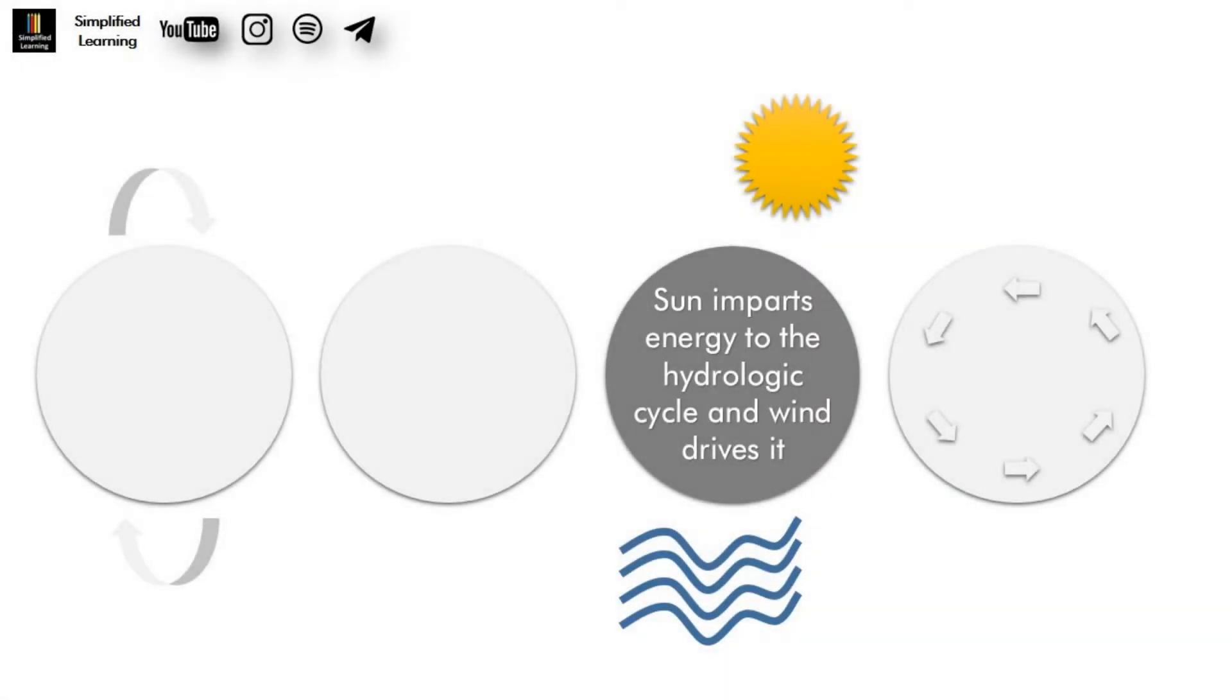Point number three. The hydrologic cycle has sun as the source of energy and the Coriolis force controls the flow of wind.